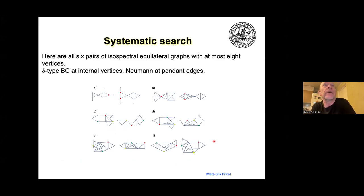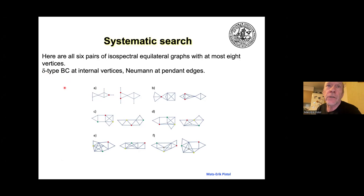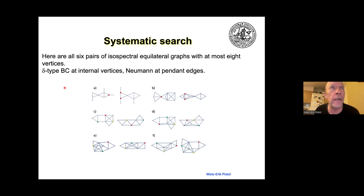Then I continued and found some very interesting isospectral graphs. These pairs have Neumann boundary conditions at the pendant edges, but they have delta-type boundary conditions at the other edges. That means there is a parameter alpha that can be chosen at will, and they still remain isospectral. So these are a whole family of isospectral pairs — a whole family of boundary conditions at these internal edges — and they remain isospectral.